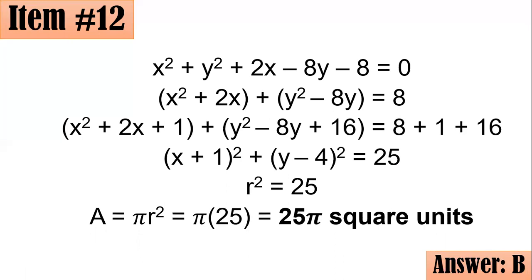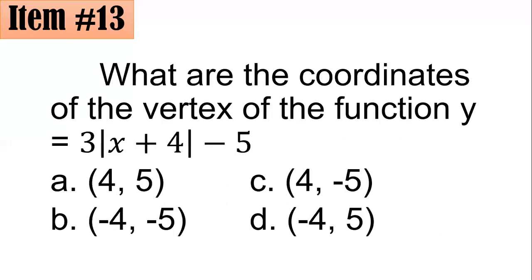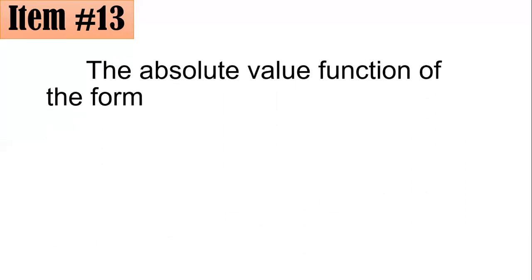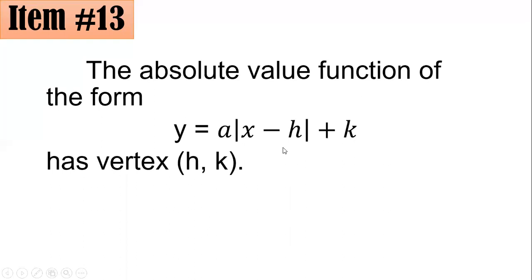Number 13. What are the coordinates of the vertex of the function y = 3|x + 4| - 5? Is it (4, 5), (-4, -5), (4, -5), or (-4, 5)? So this time we have here, we are looking for the vertex of an absolute value equation. So if you have an absolute value function of the form y = a|x - h| + k, then it has a vertex, which is (h, k).